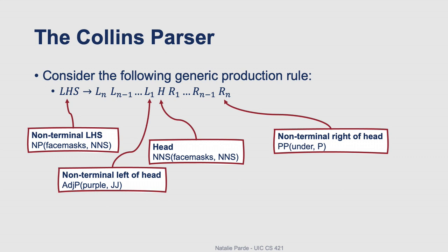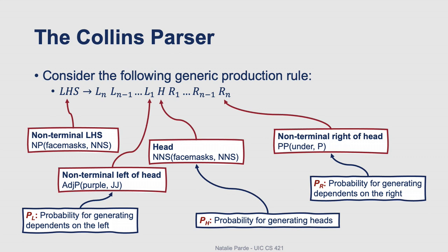For the constituents on the right-hand side of the production rule, we need to compute different types of probabilities depending on where they are situated with respect to the head. We'll have one type of probability, P sub L, for generating dependents to the left of the head; one type of probability, P sub H, for generating the head; and one type of probability, P sub R, for generating dependents to the right of the head.